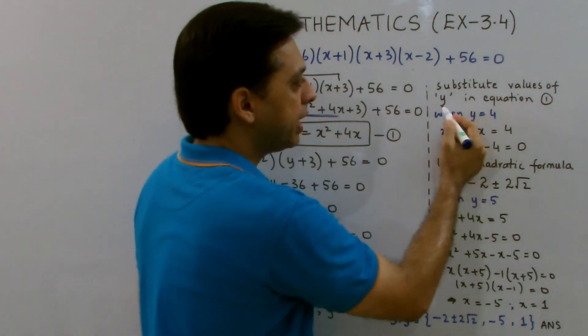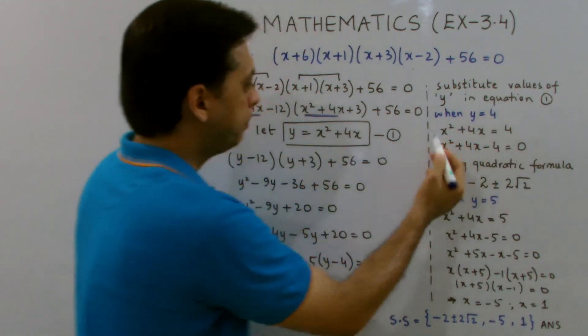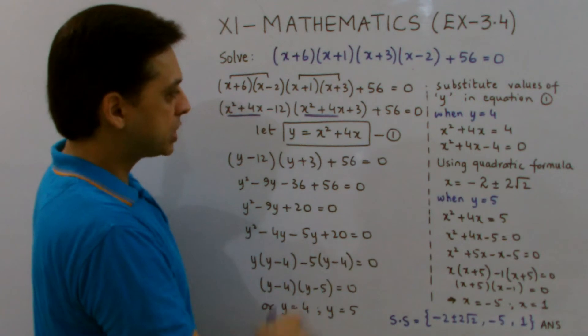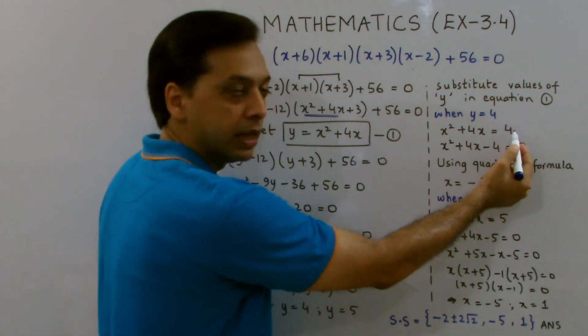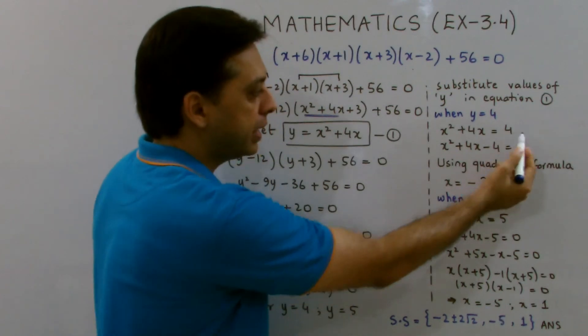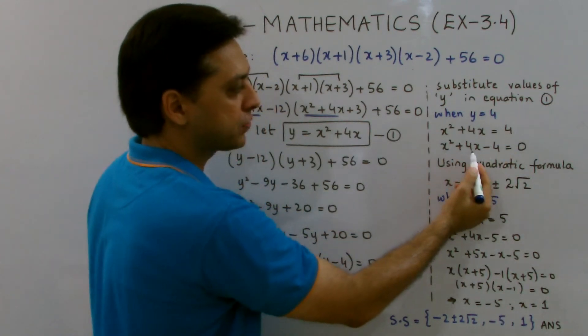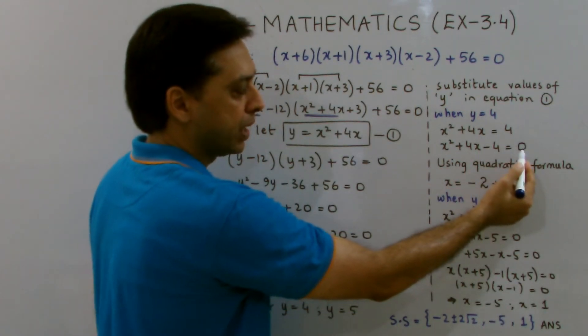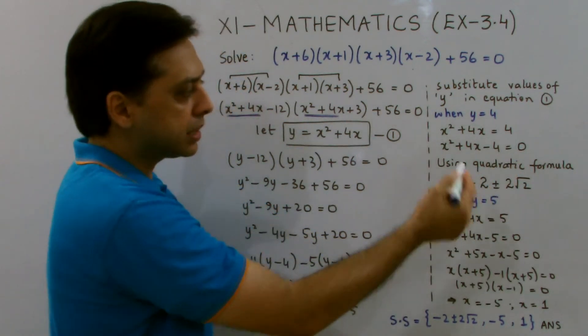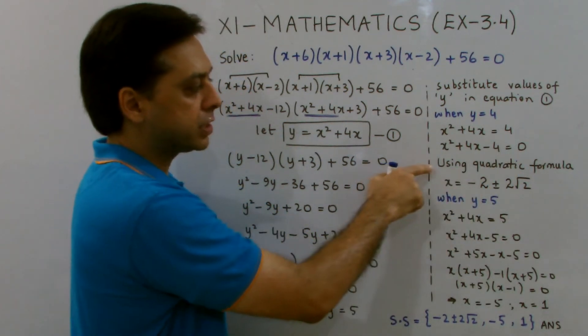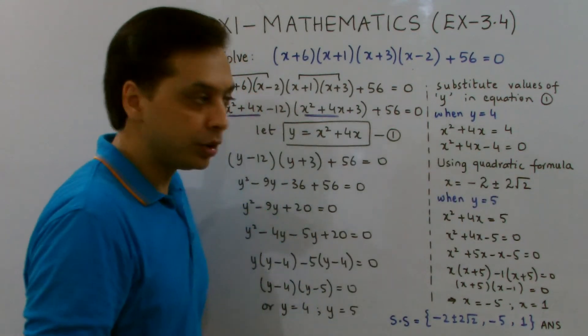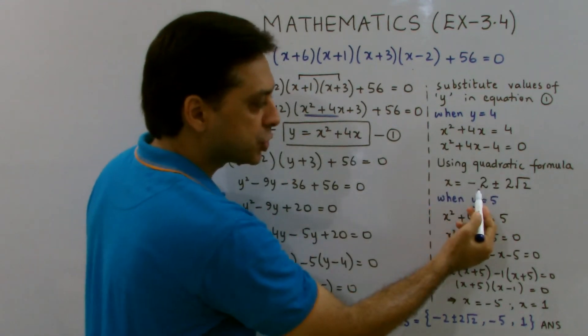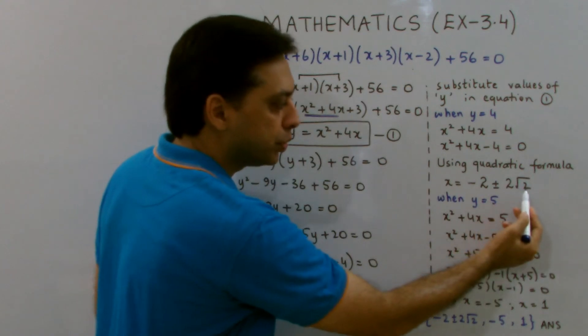Now, substituting the values of y in equation 1, when y equals 4, I put this value back, so I get x squared plus 4x equals 4. Adding negative 4 to both sides, I develop this equation: x squared plus 4x minus 4 equals 0. Now, I would try to save some space, so straight away using the quadratic formula, we get this answer: minus 2 plus minus 2 square root 2.